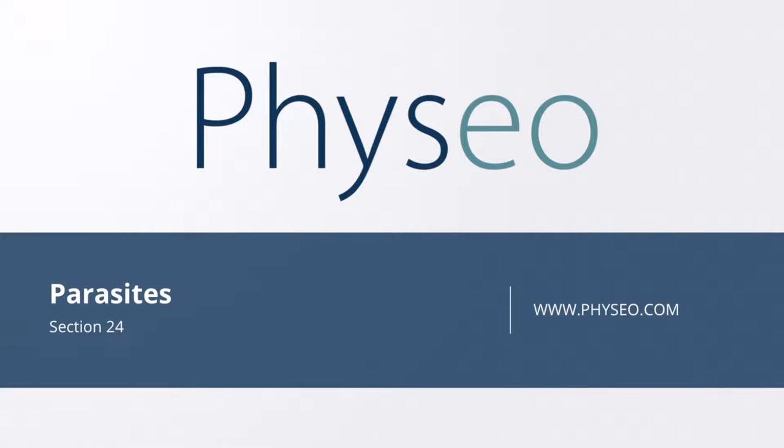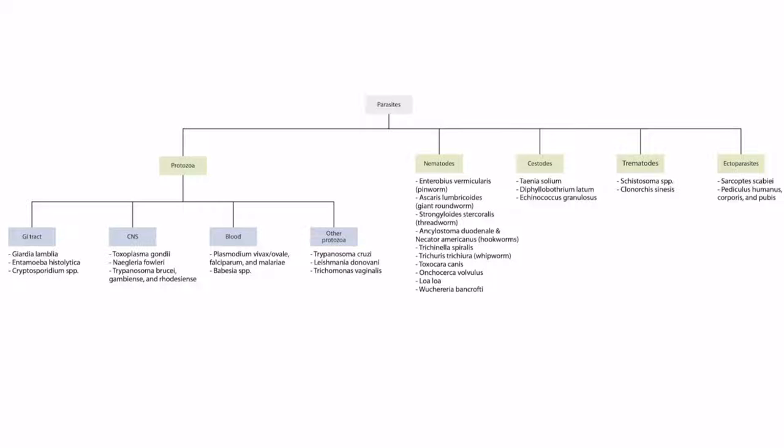Welcome to section 24 of the parasites. This is our overview figure showing the parasites you need to know for step one. In this lecture, we will be talking about the first trematode on our list, the schistosoma species.